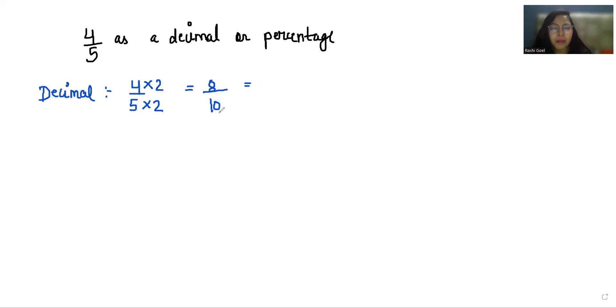I have to place the decimal according to the number of zeros in the denominator. There is one zero in the denominator, so I place the decimal before one digit. Since there's no digit there, I write 0. So 4/5 in decimal form is 0.8.